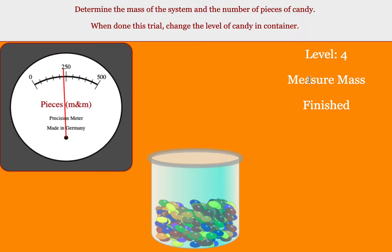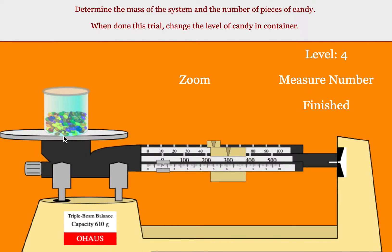Once you have your number of pieces, you then measure the mass of the container. Remember, you're not just weighing the candy, but you're weighing the container too. So when you do this, you'll get a mass. In this case, we're at 351 point something.